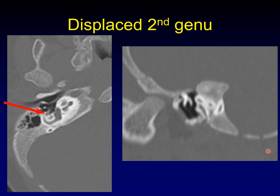Another way the facial nerve can become displaced is to have the second genu in the wrong position or flattened. Normally, the second genu of the facial nerve is on the medial aspect of the tympanic cavity. Here it's been displaced laterally, and on this sagittal reformatted image, instead of the expected near 90-degree turn, it makes a slow, obtuse angle. This is an ectopic placement of the second genu — displaced anteriorly, inferiorly, and blunted.